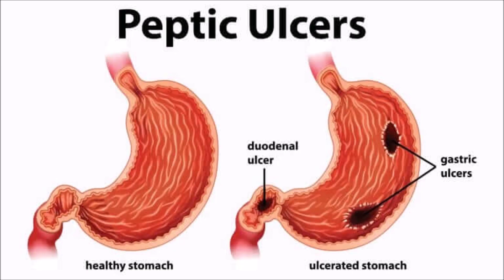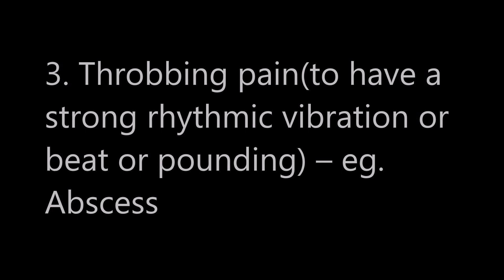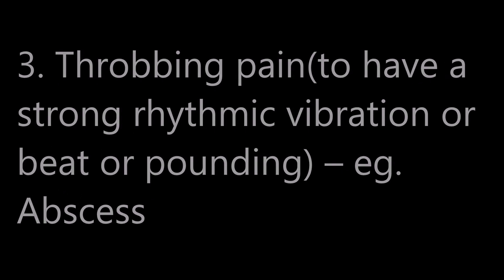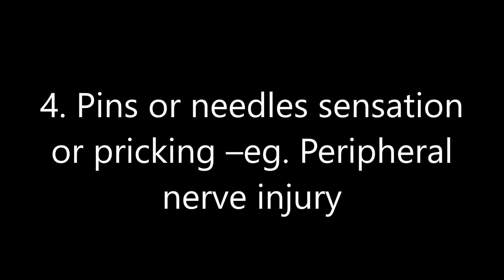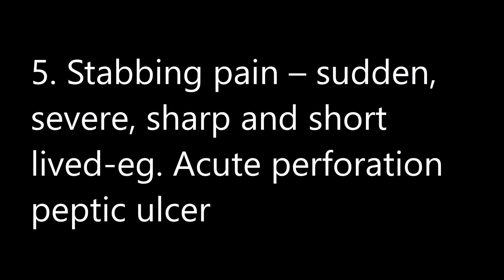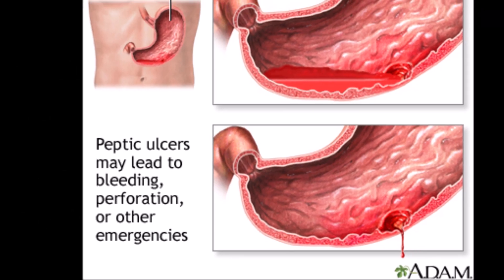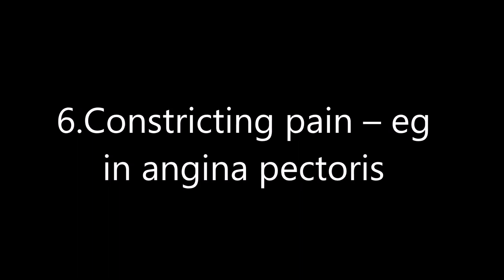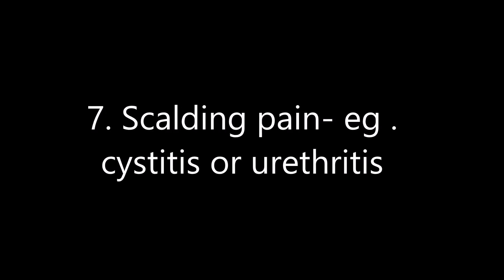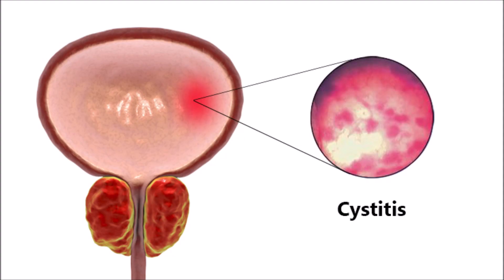Third is throbbing pain, which occurs due to beating or pounding strongly — example is liver abscess. Fourth is pins and needle sensation or pricking pain — example is peripheral nerve injuries. Fifth is stabbing pain, which is sudden, severe, sharp, and short-lived — examples include acute perforated peptic ulcer. Sixth is constricting pain, which can occur due to constriction of blood vessels — example is angina. Seventh is scalding pain — example is cystitis or urethritis, a burning pain experienced during urination.